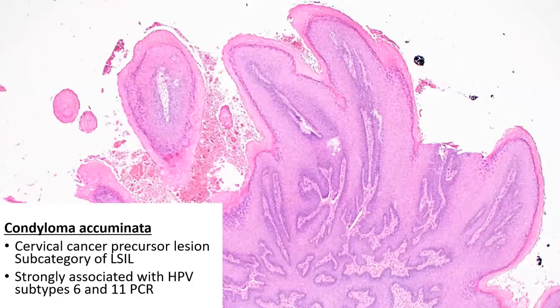A rather common sequel of HPV infection is condyloma acuminata. It presents as a bodily growth, is considered a subcategory of low-grade squamous intraepithelial lesion and a precursor of cervical neoplasia, and is strongly associated with HPV 6 and 11.